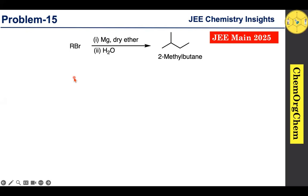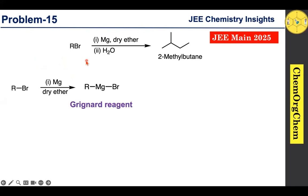Let's look briefly at this reaction mechanism. We are dealing with the Grignard reaction. The alkyl bromide reacts with magnesium in dry ether to form the Grignard reagent. This Grignard reagent then reacts with water to produce 2-methylbutane.